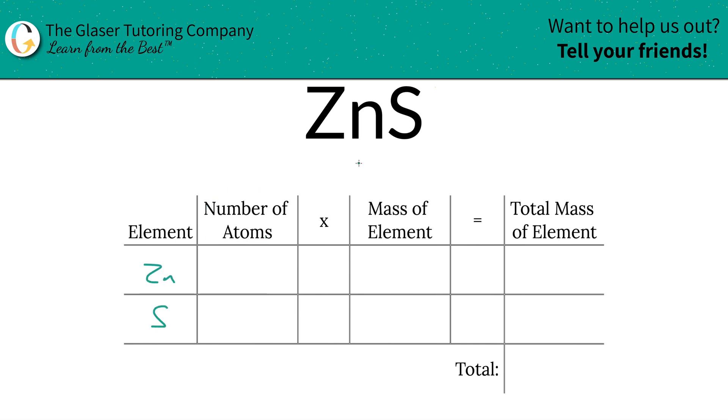Next is to identify the number of atoms — that's where the subscripts come into play. If there is no subscript, just put in a one. So there's one zinc and one sulfur.